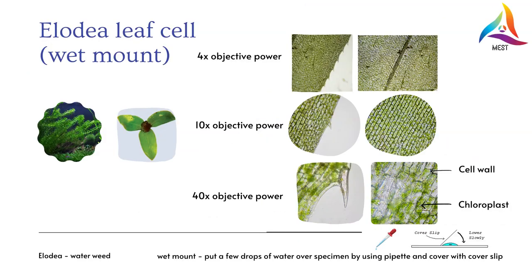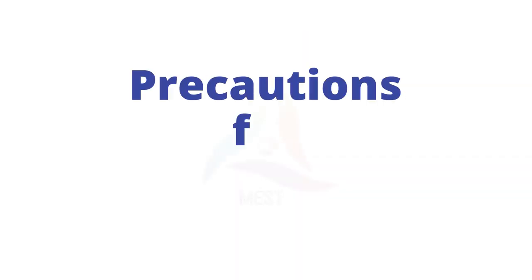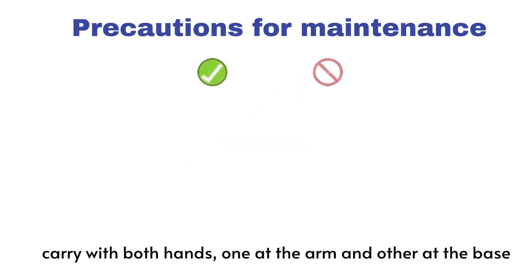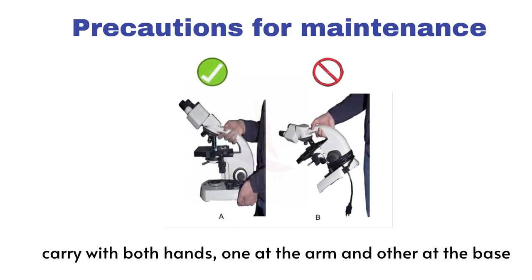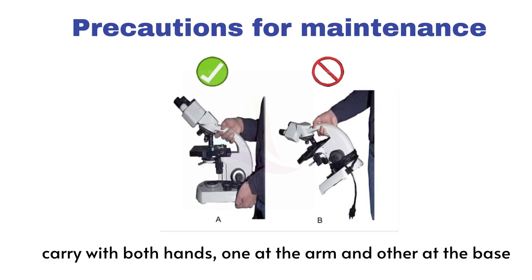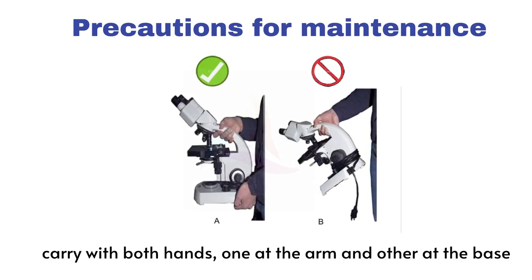These are the pictures of a Elodea leaf cell under the microscope using different magnifying objective power lenses. Let's continue to some important precautions for maintenance of microscopes for many years. Always carry your microscope with two hands, one grasping the arm and the other supporting the base.